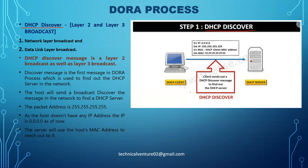Going into more detail: the first message, DHCP Discover, is a broadcast for both Layer 2 and Layer 3. In the OSI model, Layer 2 is the data link layer and Layer 3 is the network layer. So the DHCP Discover message is both a Layer 2 broadcast and a Layer 3 broadcast message.